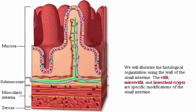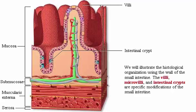We will illustrate the histological organization using the wall of the small intestine. The villi, microvilli, and intestinal crypts are specific modifications of the small intestine. We will describe other regional modifications as we move through the tract.